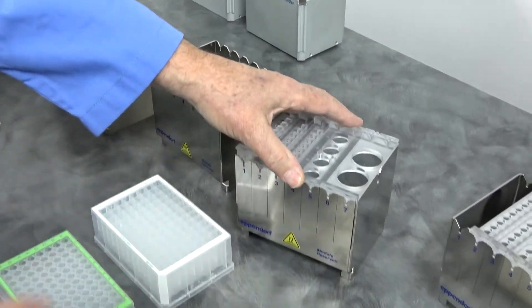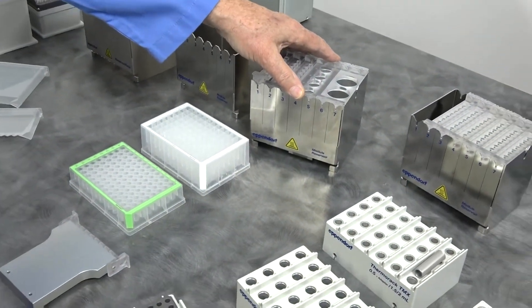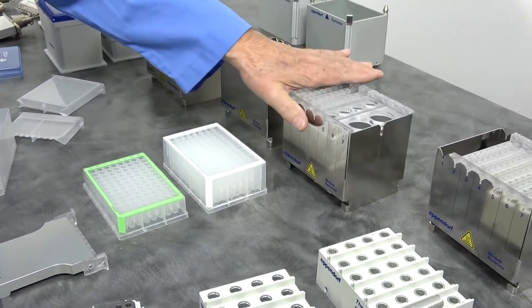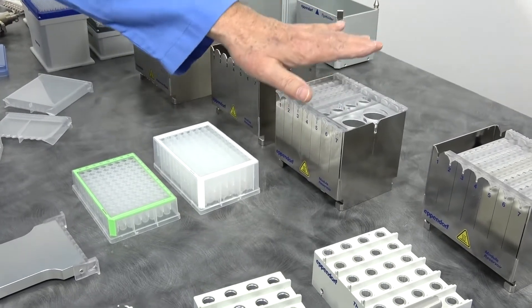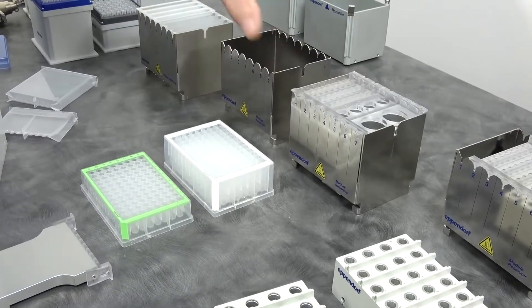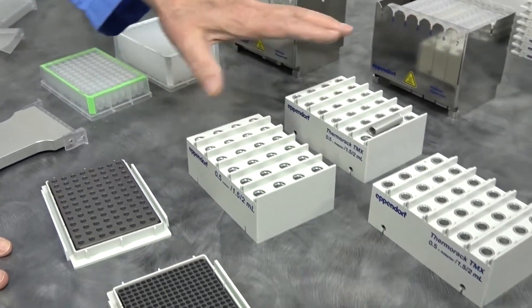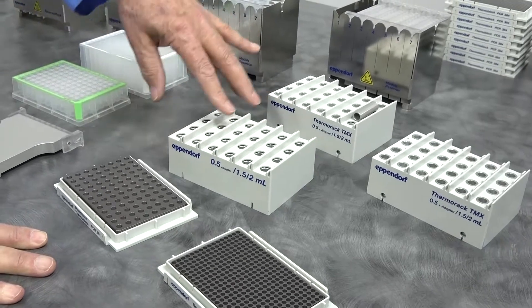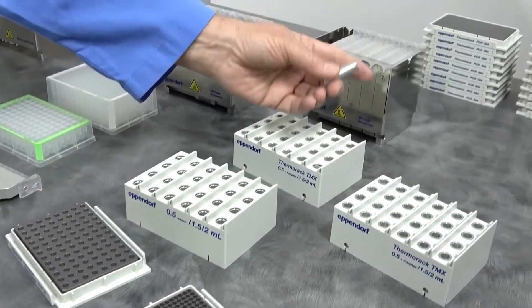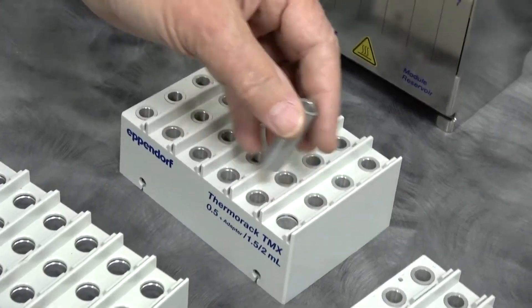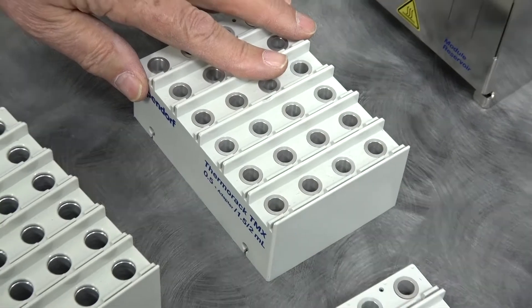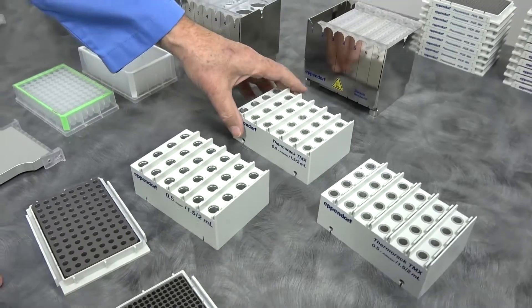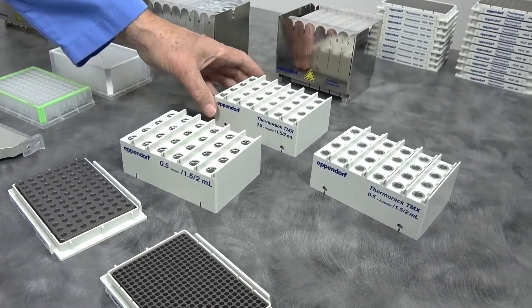These are thermable, temperable devices. So these can be put onto, such as the thermal mixer, module for steady heating. You can mix in these, you can PCR in those, a lot of different functions. You also have thermal racks. Again, these are movable with the plate crane. They are convertible so that you can, this is a two milliliter tube. They have inserts to make them 0.5 milliliter. These are, again, these are thermal, thermable racks.